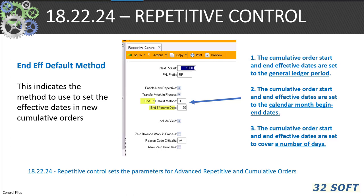The 16.24 work order control file — note the field 'limit allocation to available.' There are many settings in control files that are related to or influenced by the functionality determined in other fields. This is why much study and application is required to understand the full date functionality in QAD. In 18.22.24 repetitive control, we see parameters for advanced repetitive and cumulative orders, including the end effect default method — whether to set cumulative orders equal to GL start and end dates, start activities by calendar date, or set your own based on a number of days.